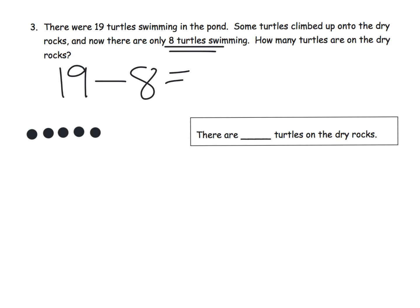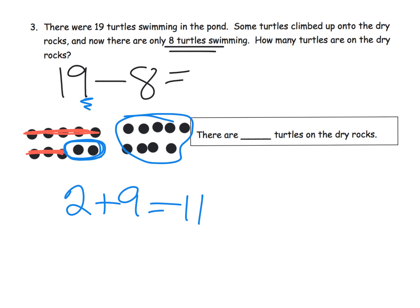So 1, 2, 3, 4, 5, 6, 7, 8, 9, 10. And then 1, 2, 3, 4, 5, 1, 2, 3, 4. So there is our 19. And then they said cross off 8. So we are going to cross off 8. So the 5 plus the 3. And then the 2 plus sentence. We've got the 2 left over from the 10 frame plus the 9 that we had as part of the 19. So 2 plus 9 is 11. So our answer is 11. There are 11 turtles on the dry rocks.